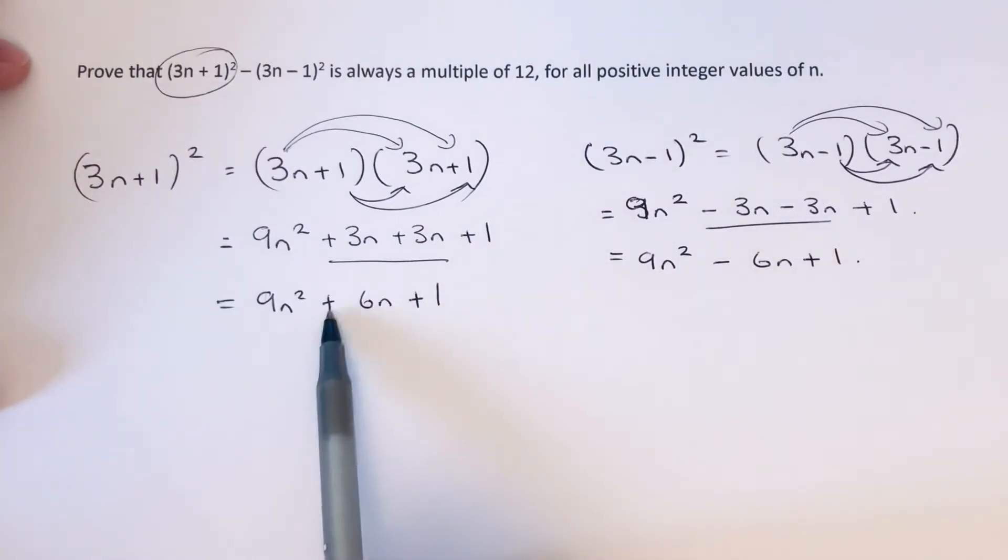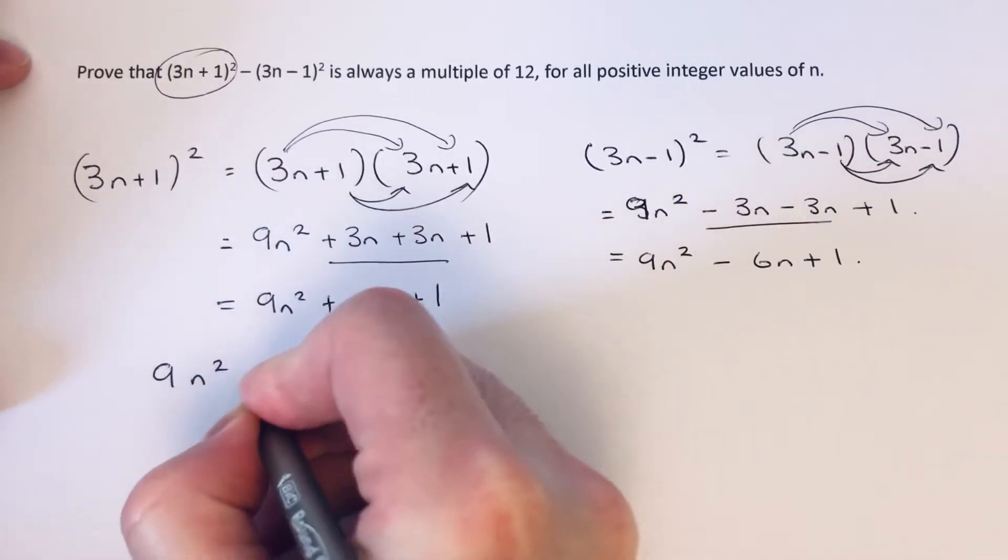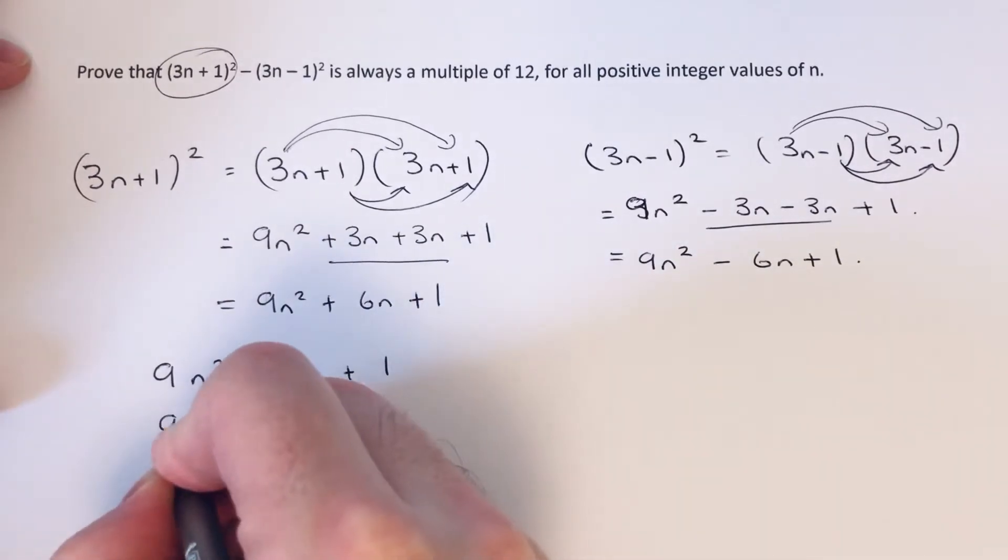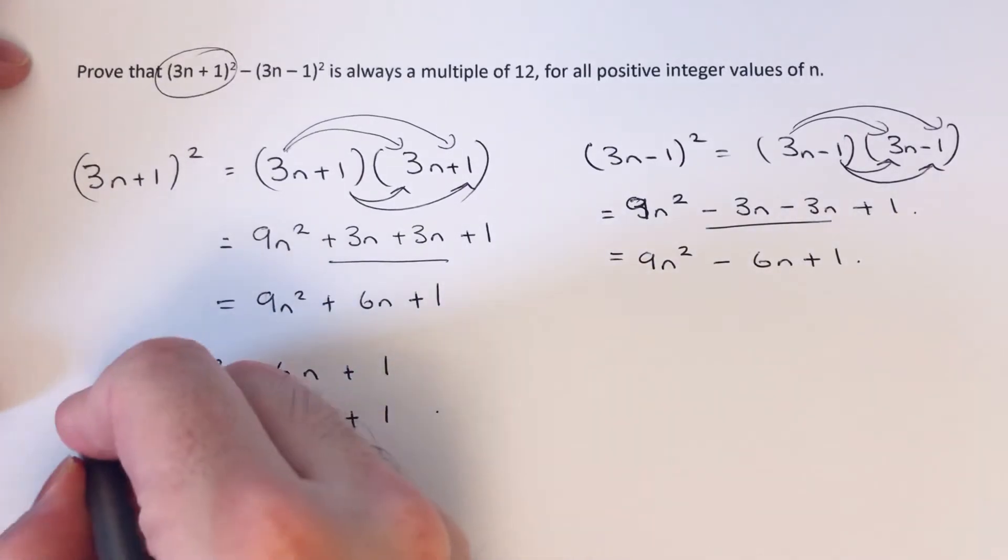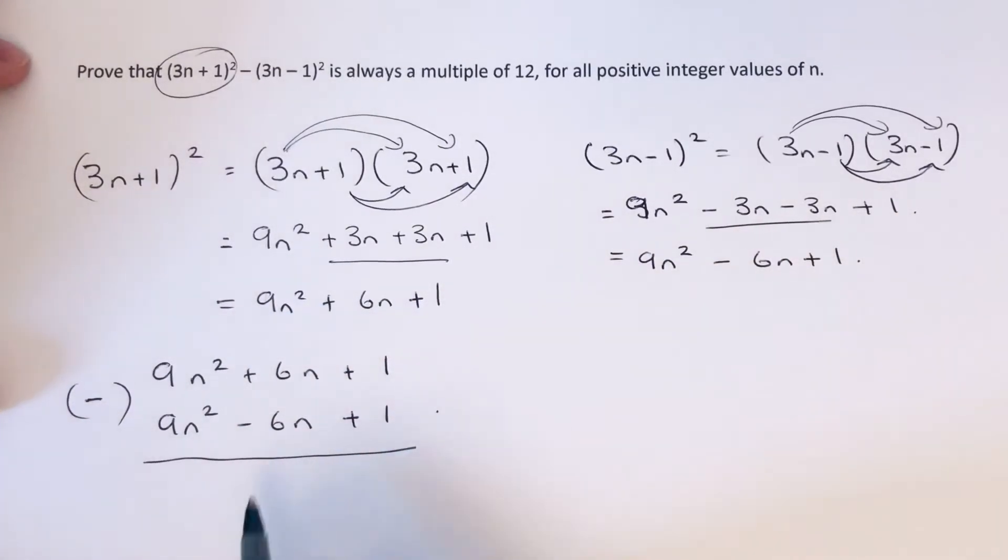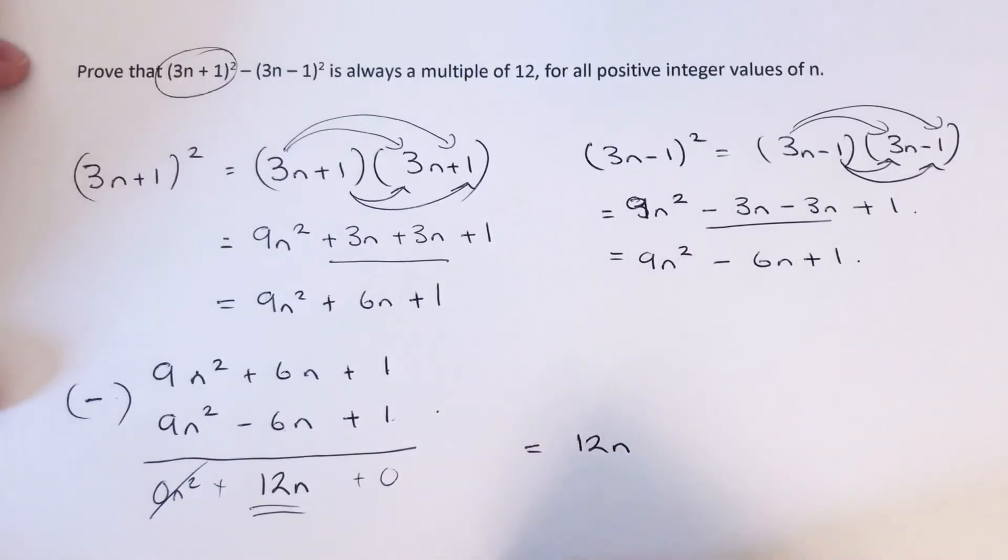Now we need to take these two answers away. I think the best way to do this would be to do it in columns because you have to be careful with the negative sign. 9n squared minus 9n squared is 0n squared, so that cancels out. 6n take away minus 6n, that would be 6n plus 6n is 12n. And then 1 take away 1 gives us 0, so we're left with 12n.